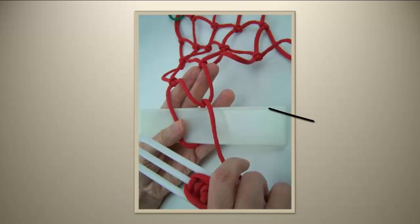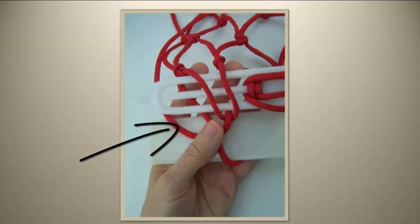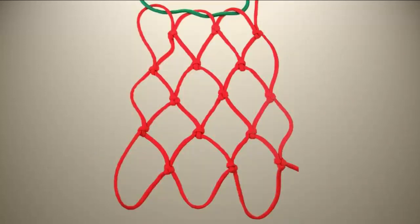You can go up through a loop in the previous row and then through the loop formed on the left. The red piece of netting was tied using this method.